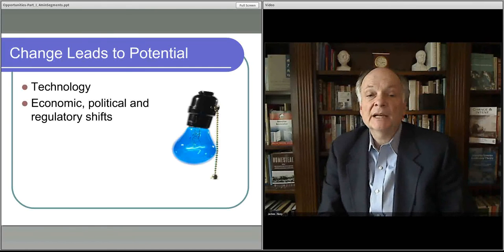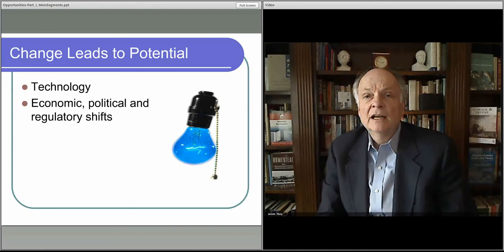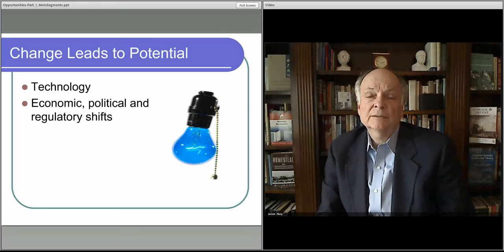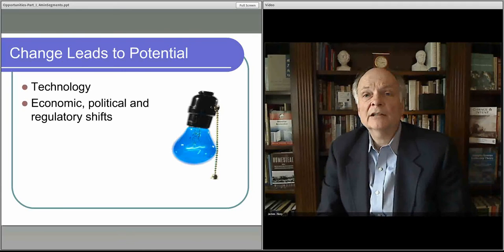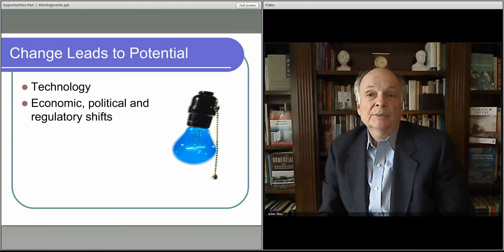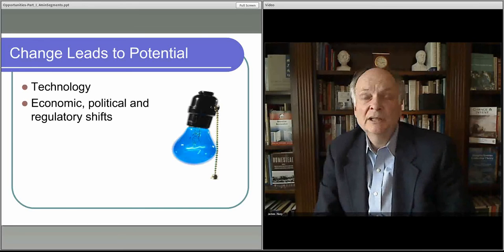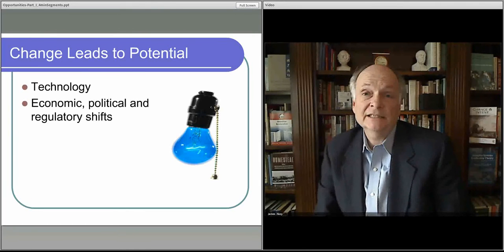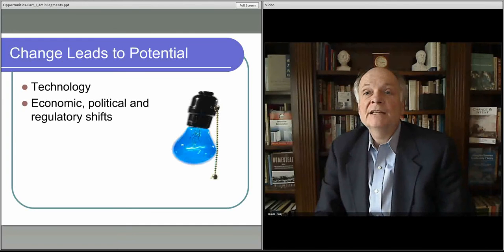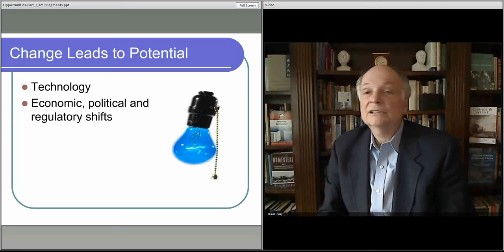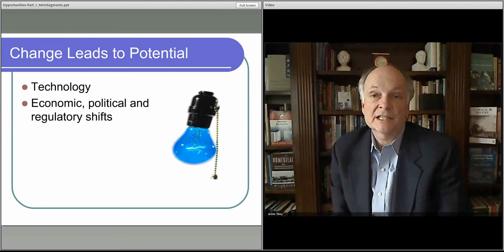Another thing that happens is economic and political regulatory trends. Recently, there was a chemical spill in a West Virginia river that polluted the drinking water. That particular plant wasn't inspected since 1991, 1992. It's likely there'll be new regulations associated with those kinds of things. You might come up with an opportunity to create a regulatory service or inspect these kinds of things because new regulations might come on board.